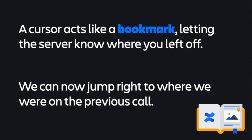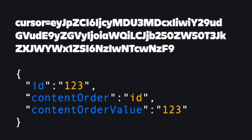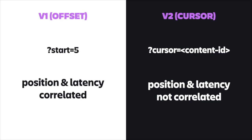Now, enter cursor-based pagination. Basically, a cursor can be thought of as a bookmark, letting the server know where you left off. The server can then jump to right where we were in the table in the previous call and start permissions checking from there. All the cursor really is is a base64-encoded JSON blob that notes from where in the data set the previous request left off. With offset-based pagination in V1, position and latency become correlated as you scroll through the data set. Whereas with cursor-based pagination in V2, position and latency are not correlated, and this translates to a huge increase in performance as the client scrolls through large data sets.